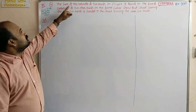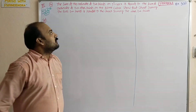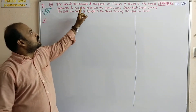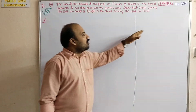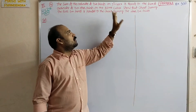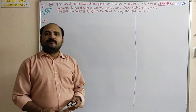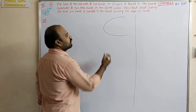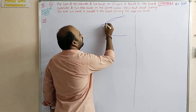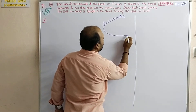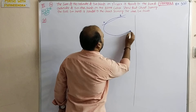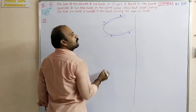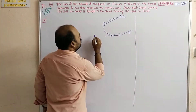The next question: the sum of the ordinates of two points on y² = 4x is equal to the sum of ordinates of two other points on the same curve, such that the chord joining the first two points is parallel to the chord joining the other two points. See, the figure will come like this — this is the parabola. I am assuming two points A and B, and another set of points C and D. This is the y² = 4x parabola.